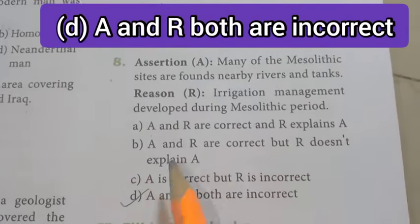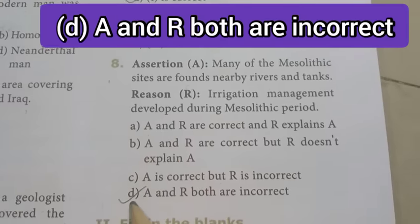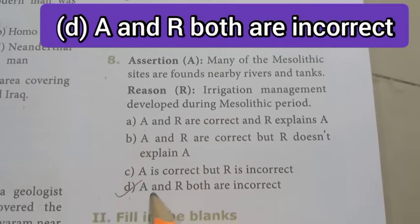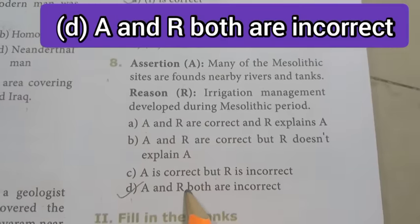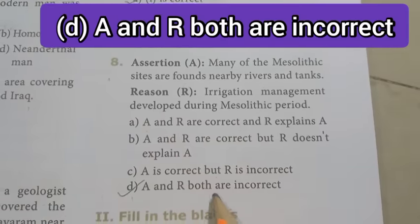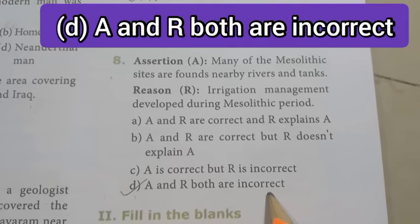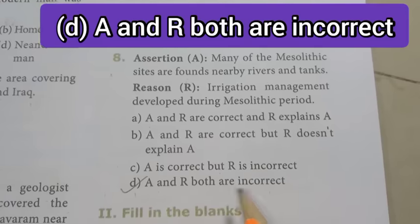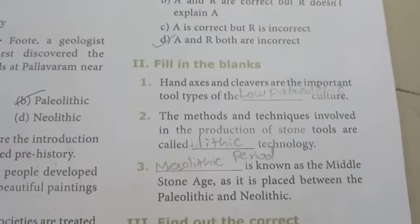Eighth one: Assertion - many of the Mesolithic sites are found nearby rivers and tanks. Reason - irrigation management developed during the Mesolithic period. Answer is D: both assertion and reason are incorrect.